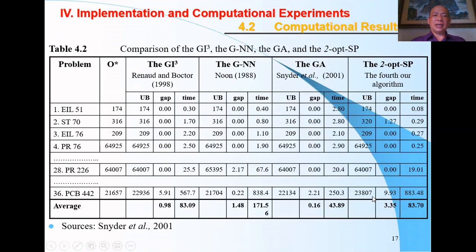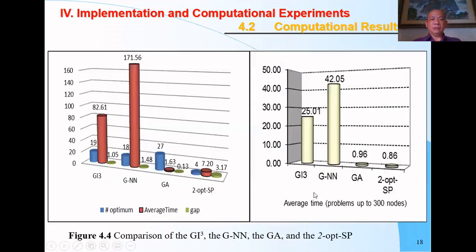After that, I used the 2-opt SP and compared it with other algorithms developed by other researchers. These are Snyder et al. 2006 GI3, GNN by Noon, and GA by Snyder et al. We can easily see that the 2-opt SP is comparable with the GA in average computational time. Especially with problems up to 300 nodes, the 2-opt SP is the best.